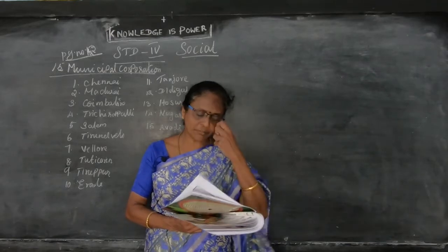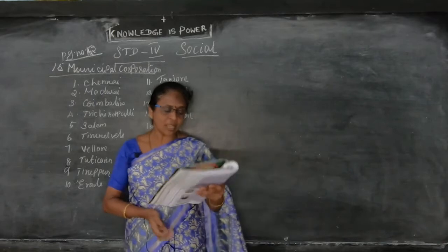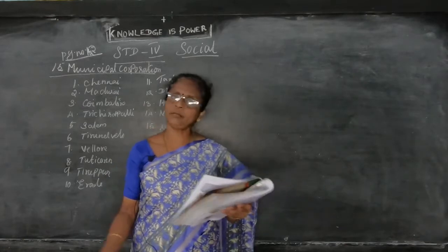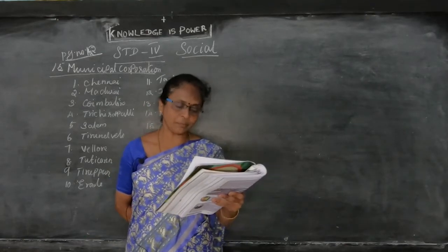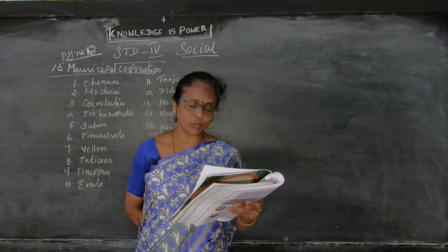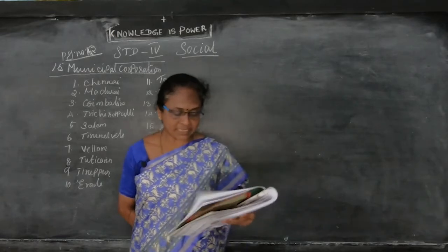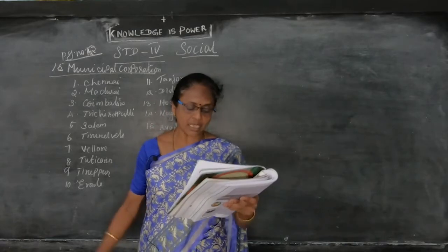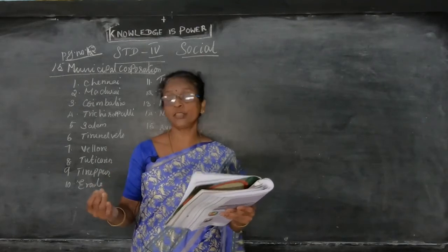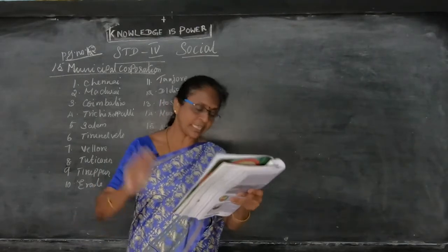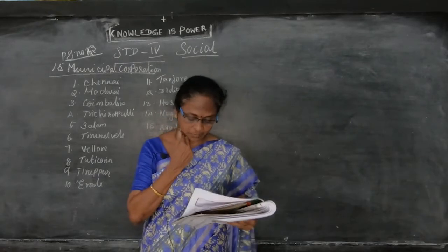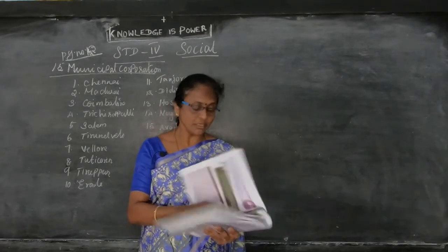Apart from municipalities and corporations, what else is there? Town Panchayat is also there. The tenure of the president and other members is five years. The Panchayat is governed by the executive officer. Town Panchayat functions in places where the population exceeds 5,000 people.